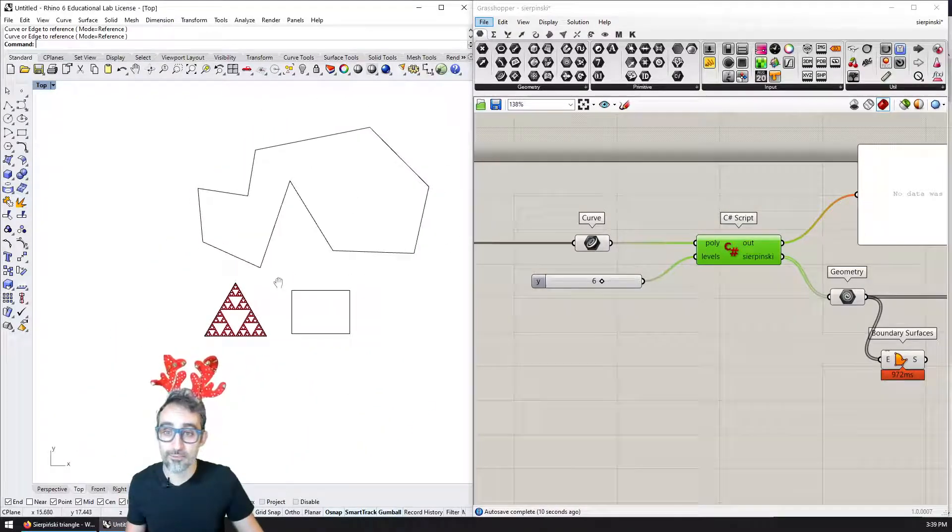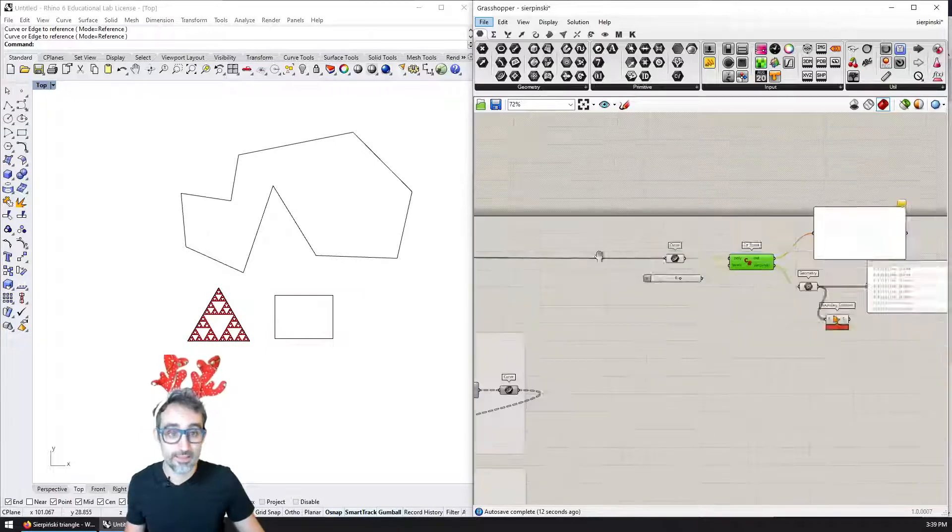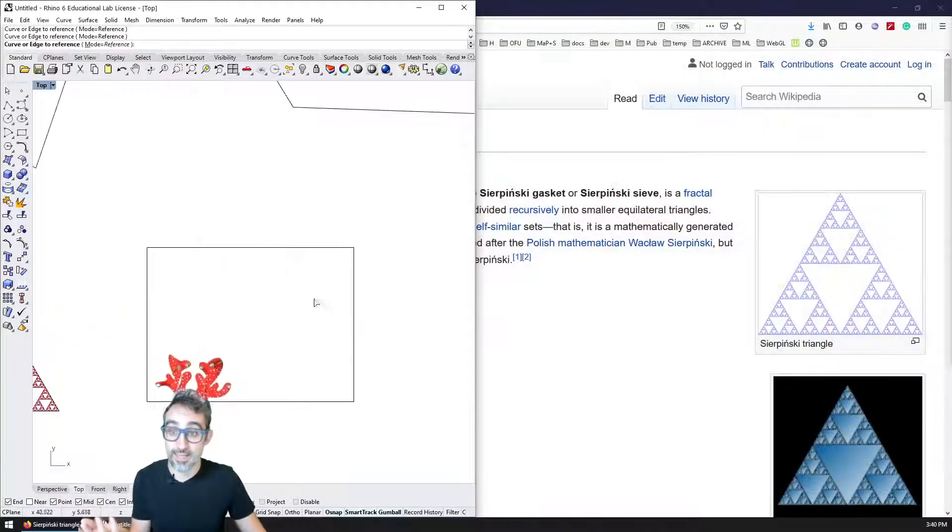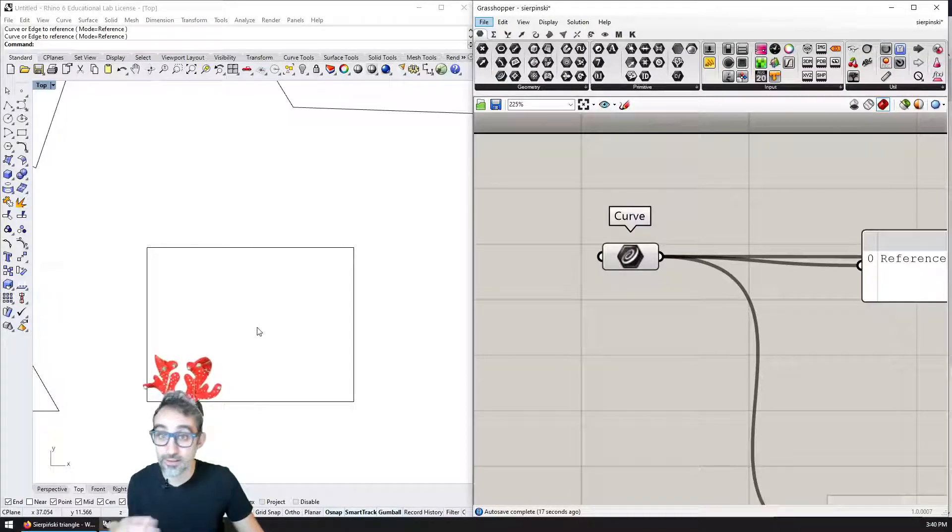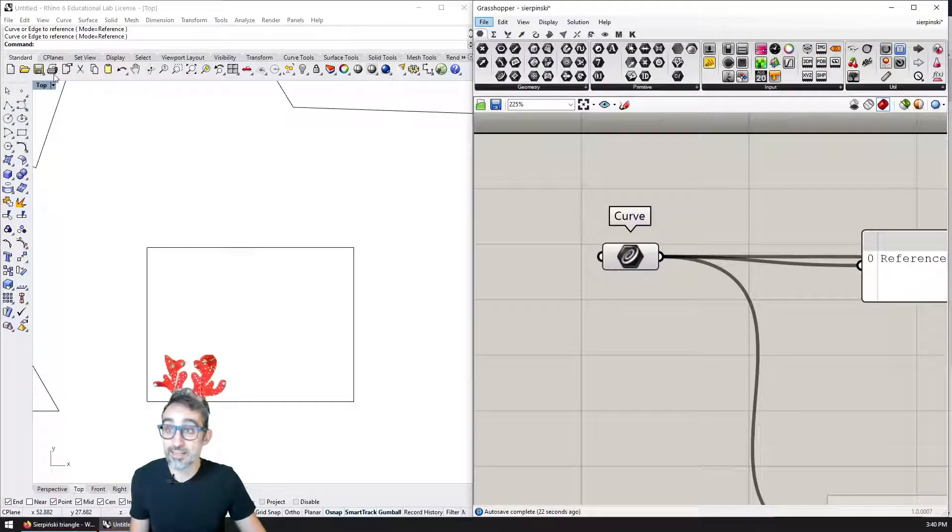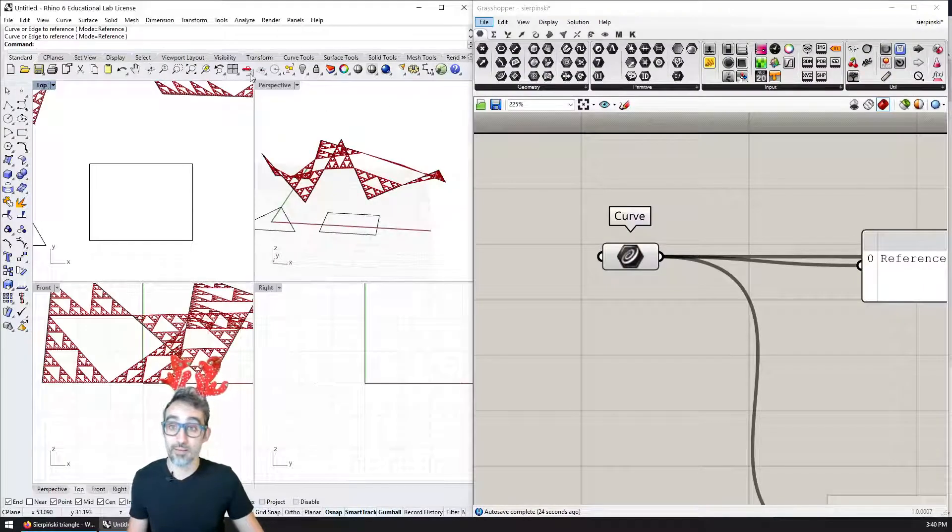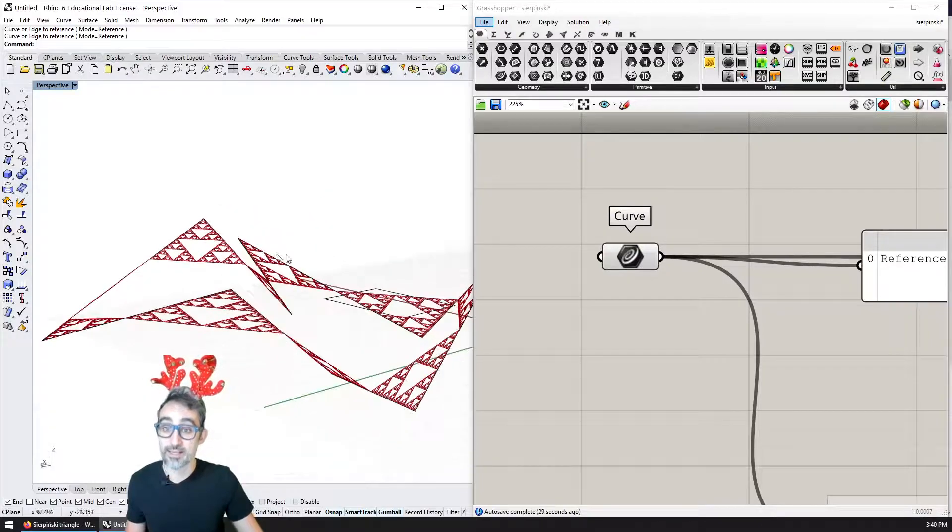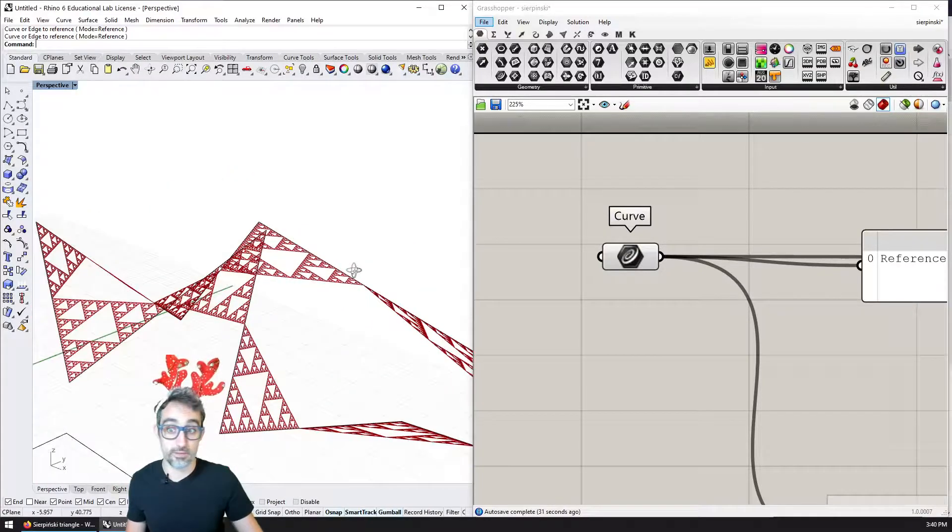And similarly, I would also like to show you how this subdivision can be applied to any polyline. It doesn't have to be a perfect triangle, it can be for example a square, or it can even be any three dimensional polyline. Any polyline accepts this kind of Sierpinski subdivisions.